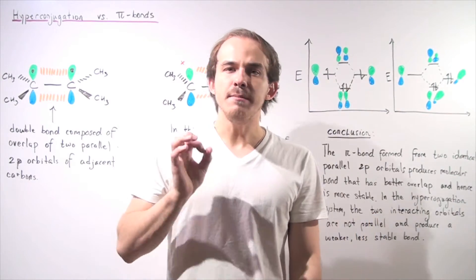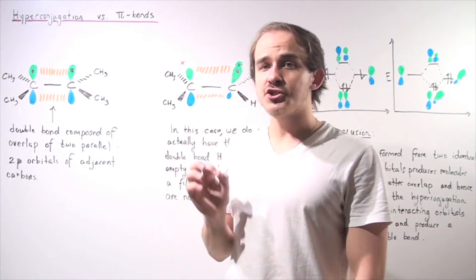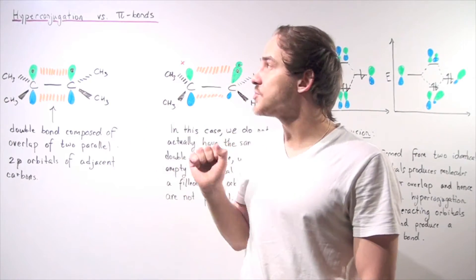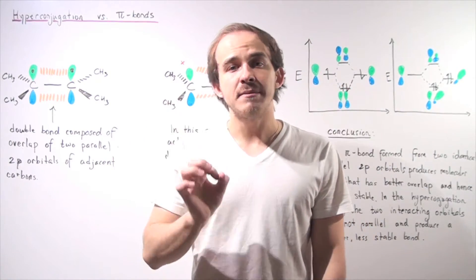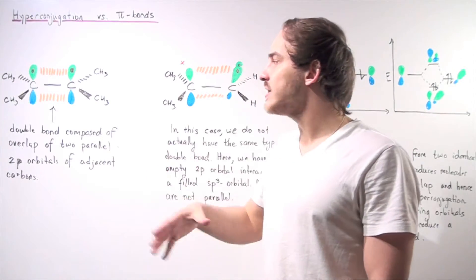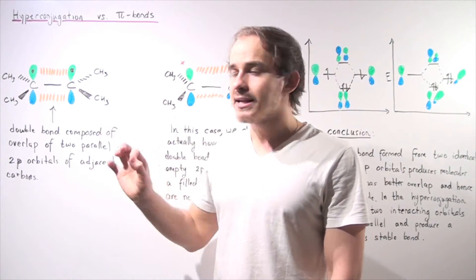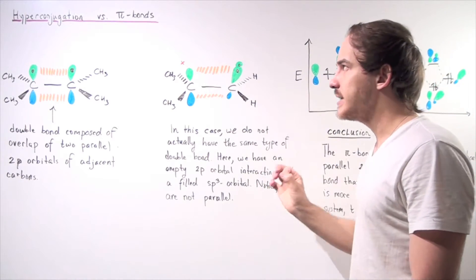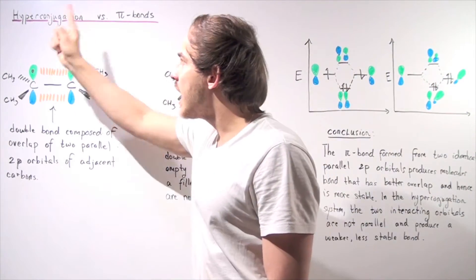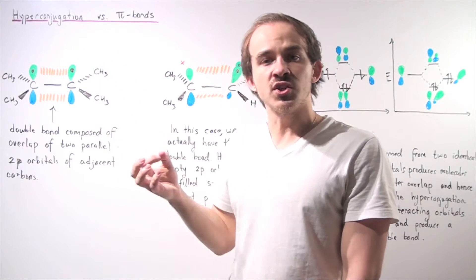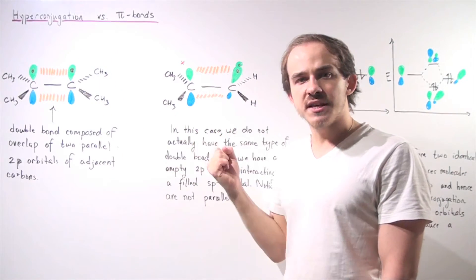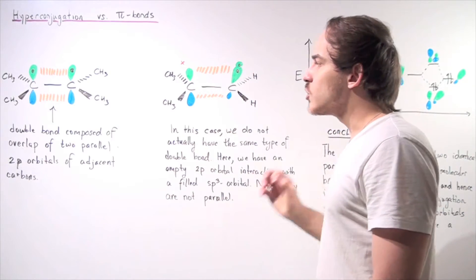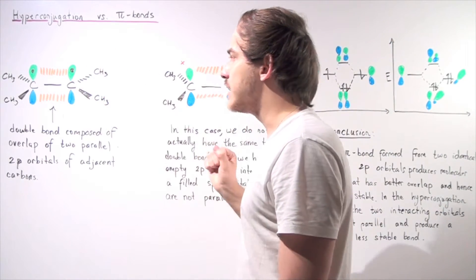In the previous lecture, we mentioned that hyperconjugated bonds are not exactly the same thing as pi bonds, and this is in fact a common misconception. In this lecture, we're going to differentiate between pi bonds and hyperconjugated bonds and see which one is the more stable, stronger bond. Let's begin with the pi bond.